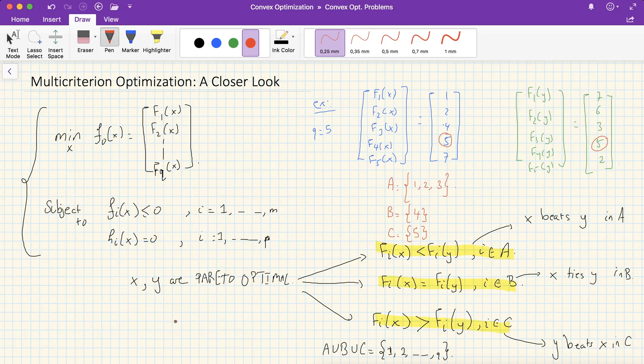Now, in the extreme case where A is C is phi, that is, B is the only non-empty set, we say that x and y have the same objective value. That said, those two vectors are equal entry-wise at x and y.